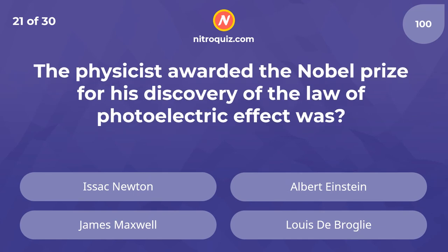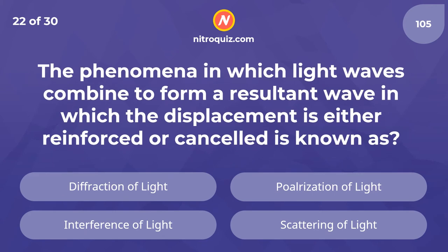The physicist awarded the Nobel Prize for his discovery of the law of the photoelectric effect was — the answer is Albert Einstein. The phenomenon in which light waves combine to form a resultant wave in which the displacement is either reinforced or cancelled is known as — the answer is interference of light.